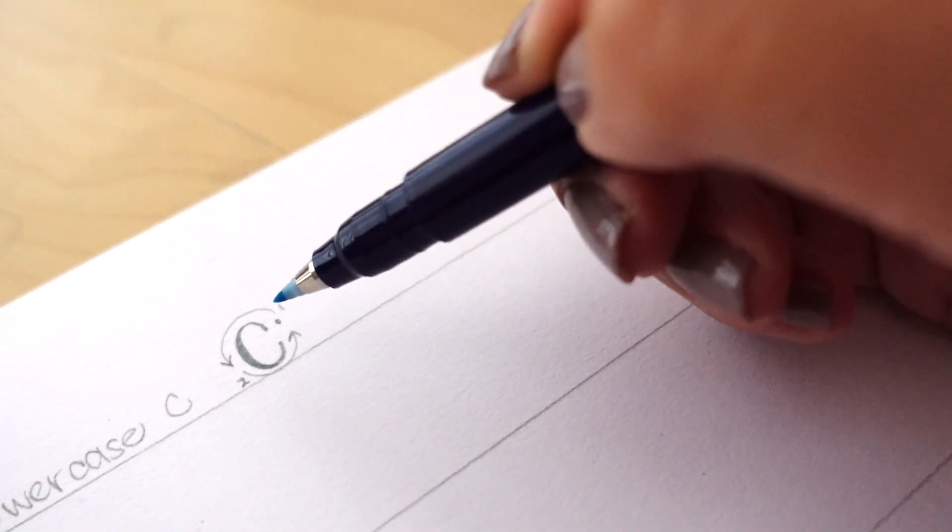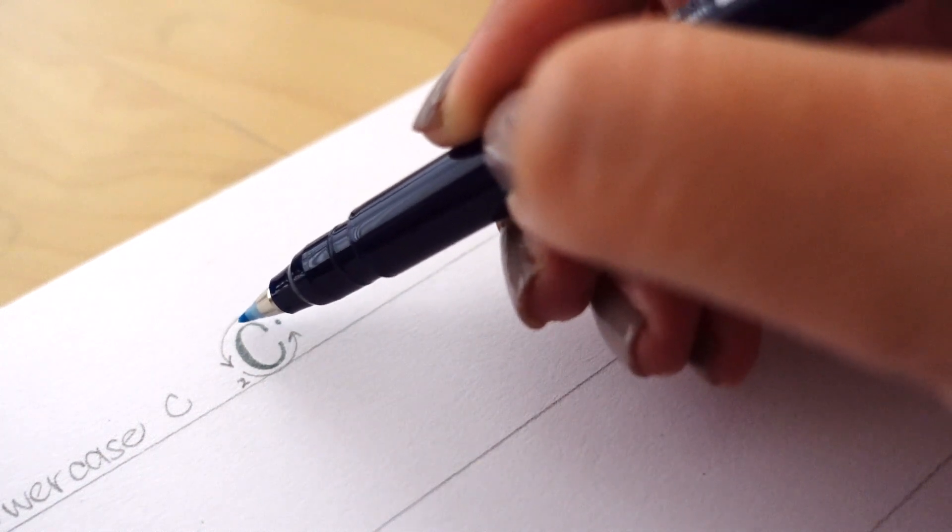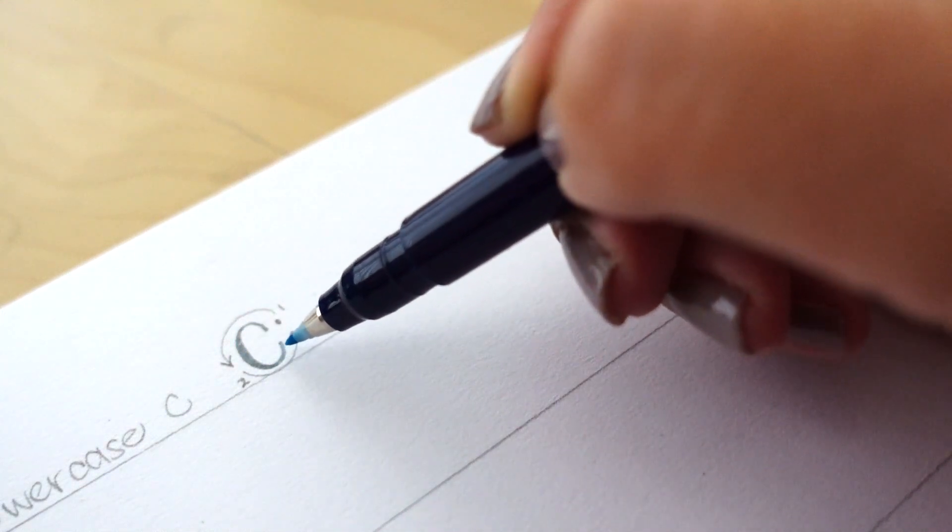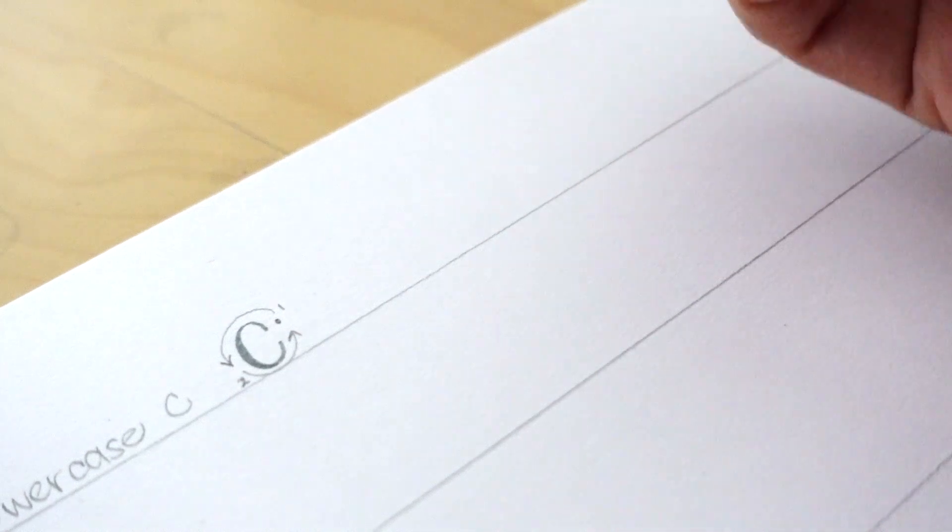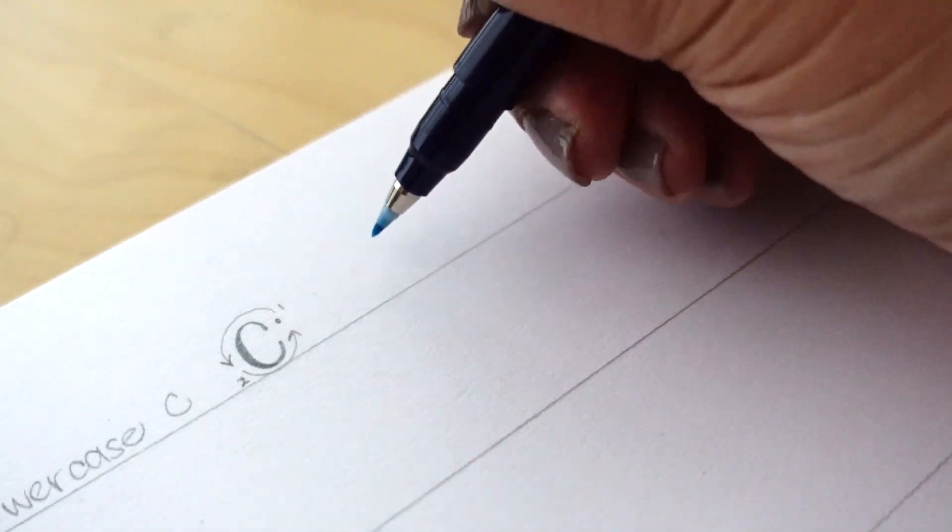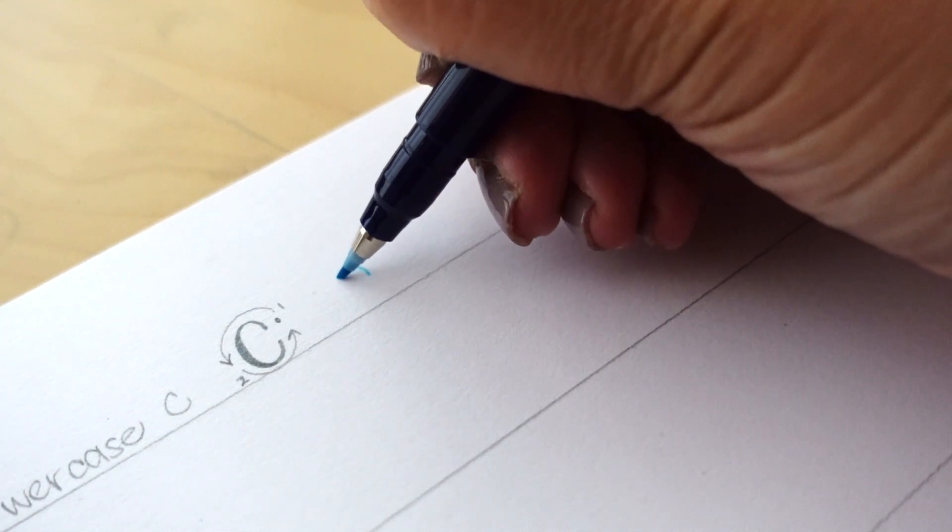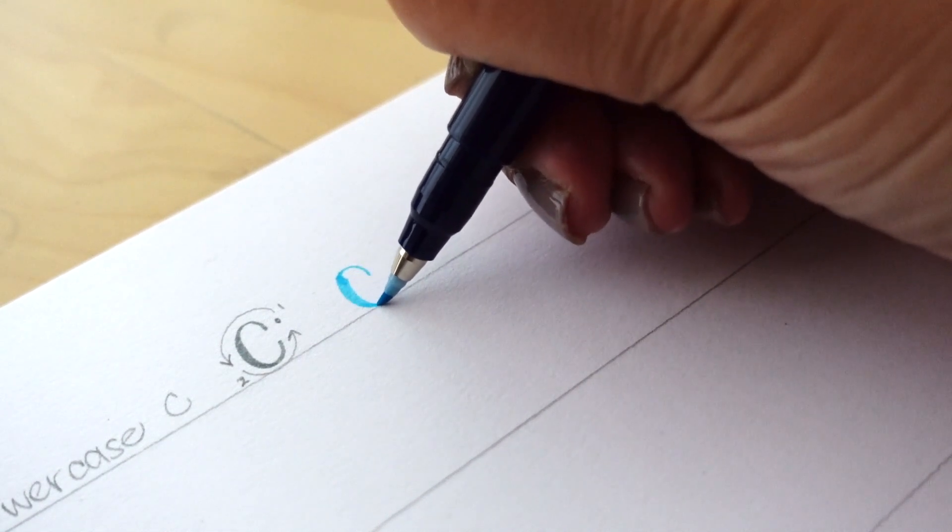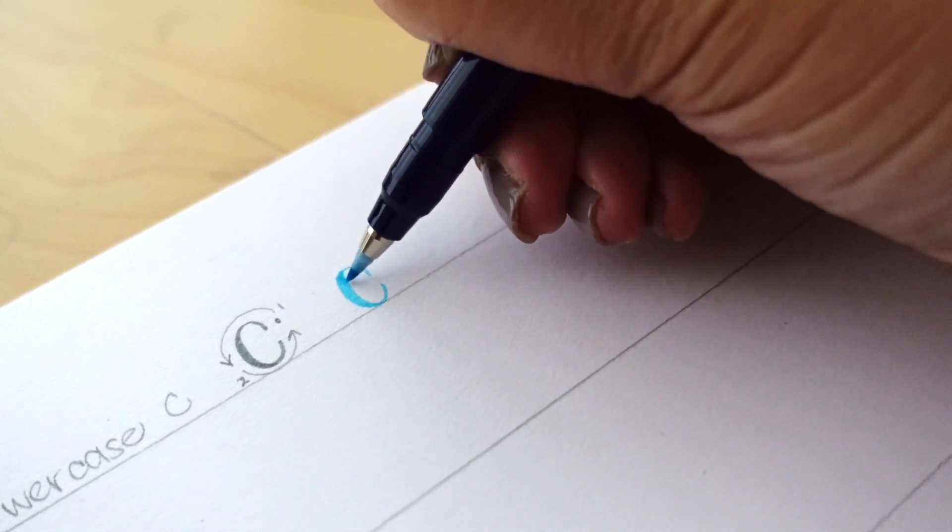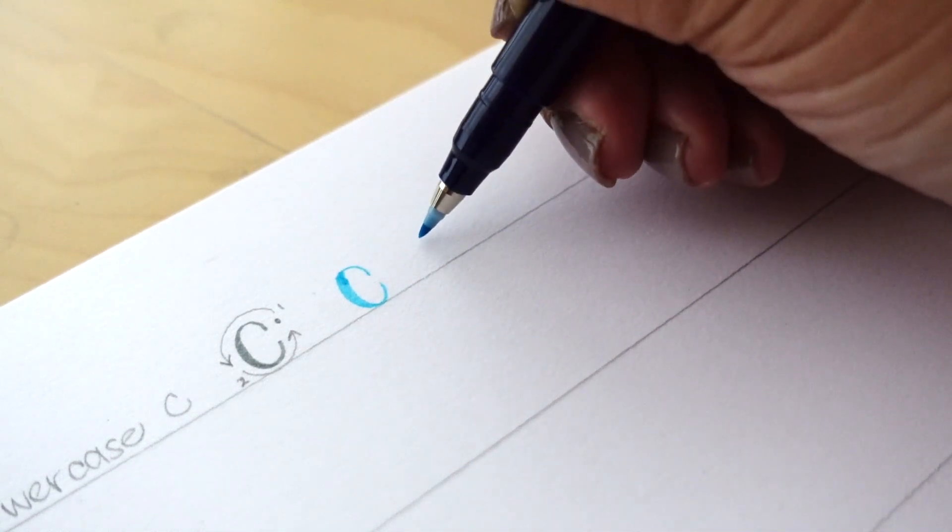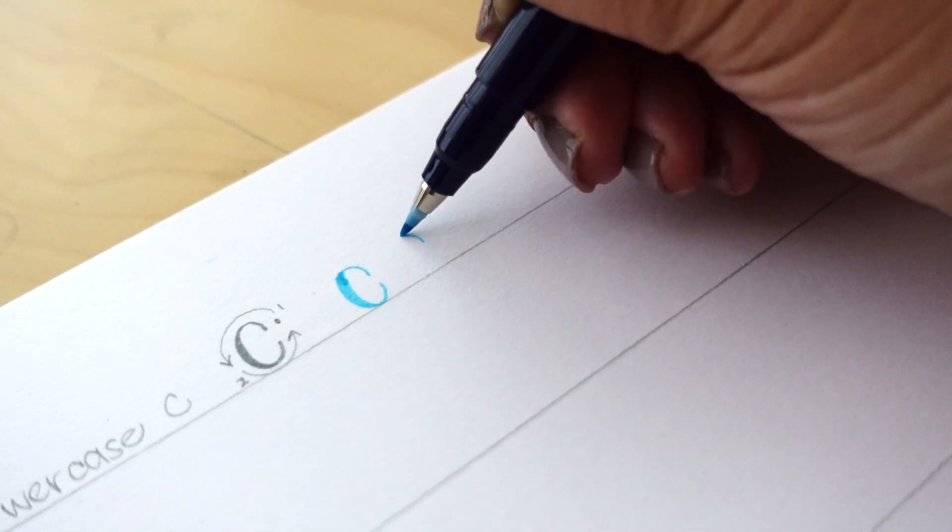Because the upper and lower case C's look the same, I'm only going to go over it once. Basically, it's an oval stroke that doesn't close. Start applying pressure once you're ready for the downward stroke, and then release as you get to the bottom to start curving your way upward.